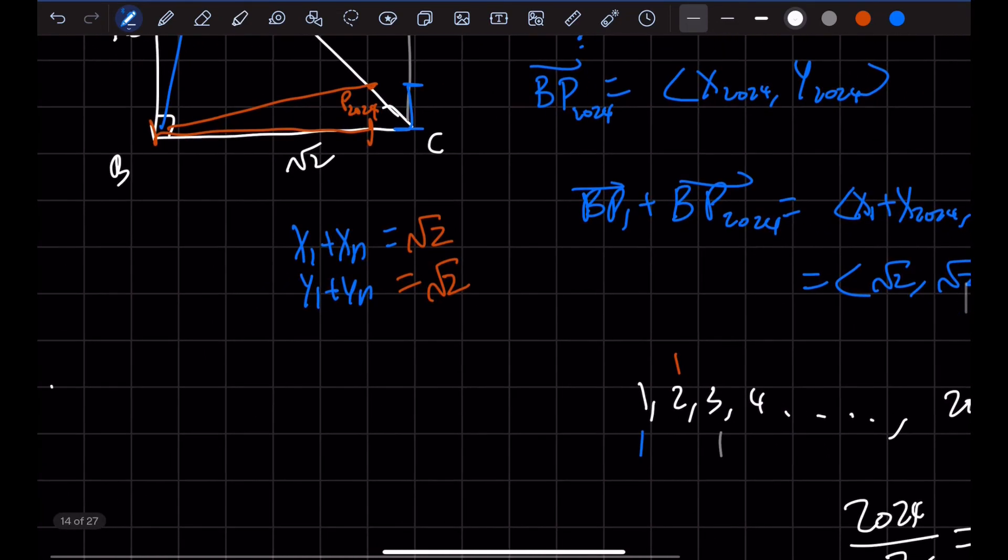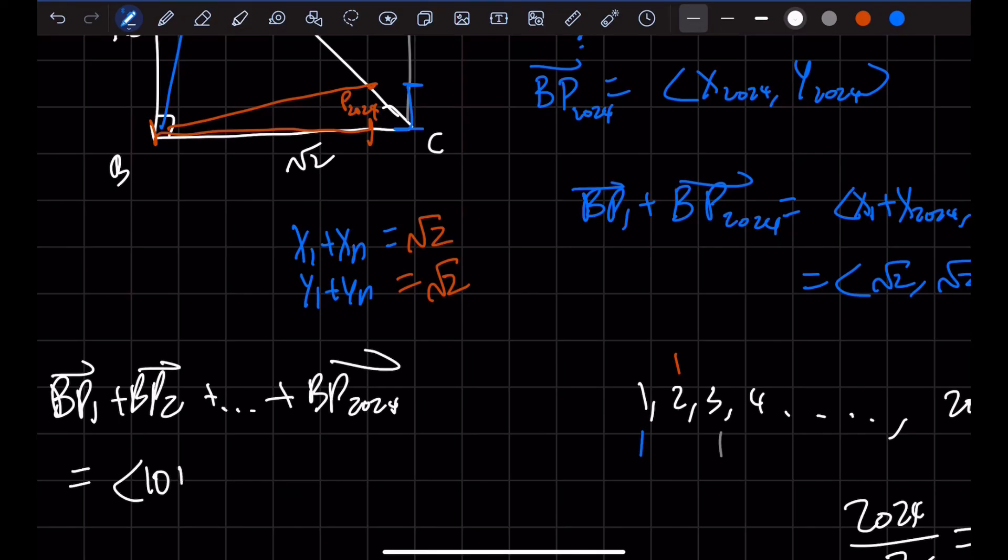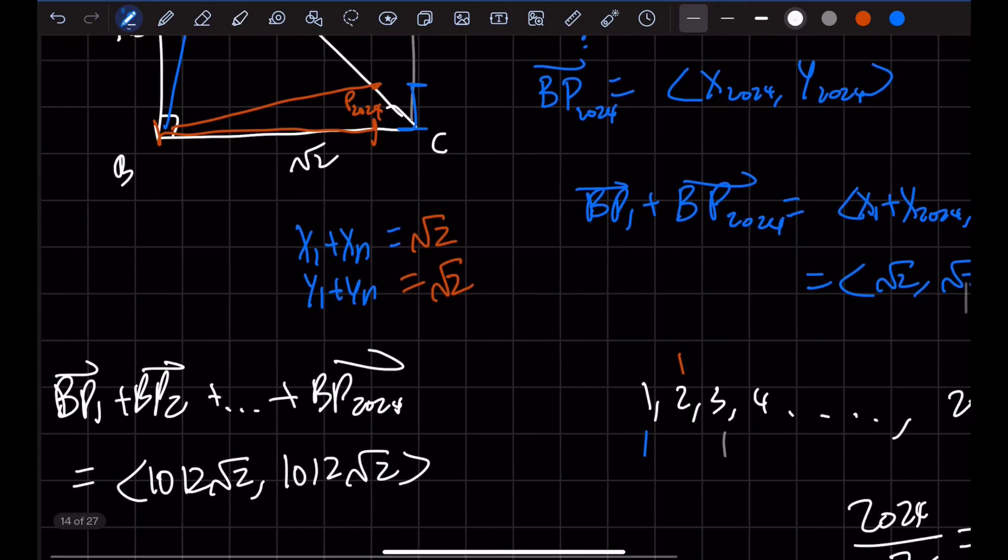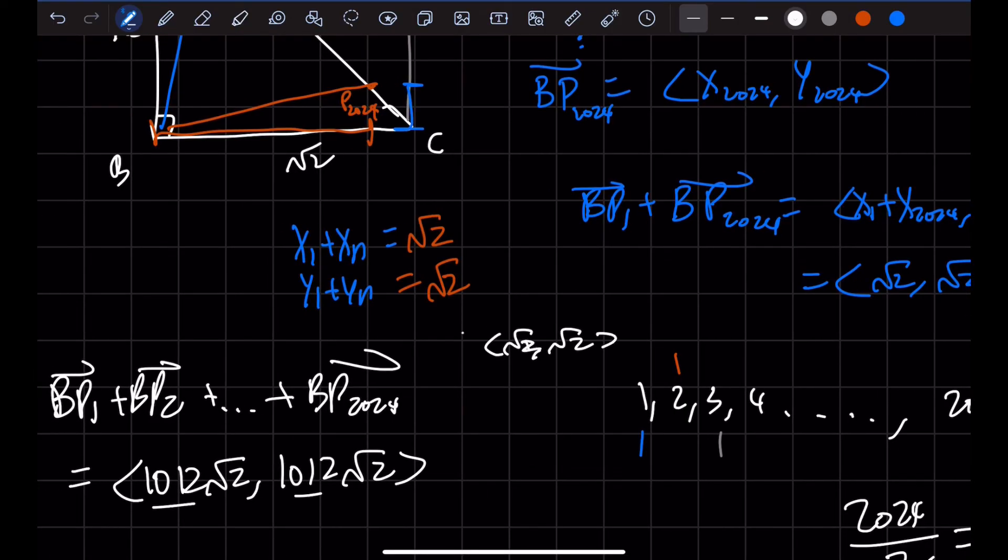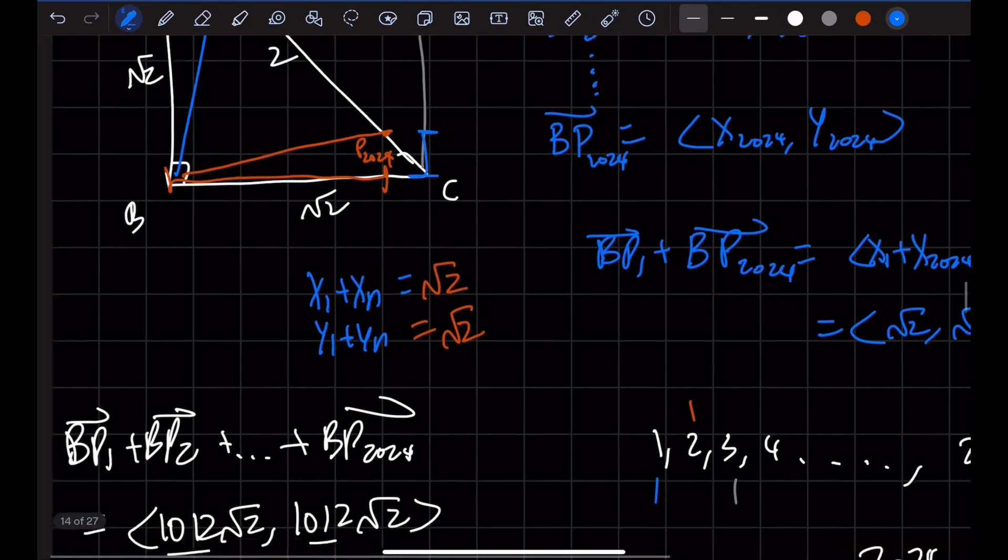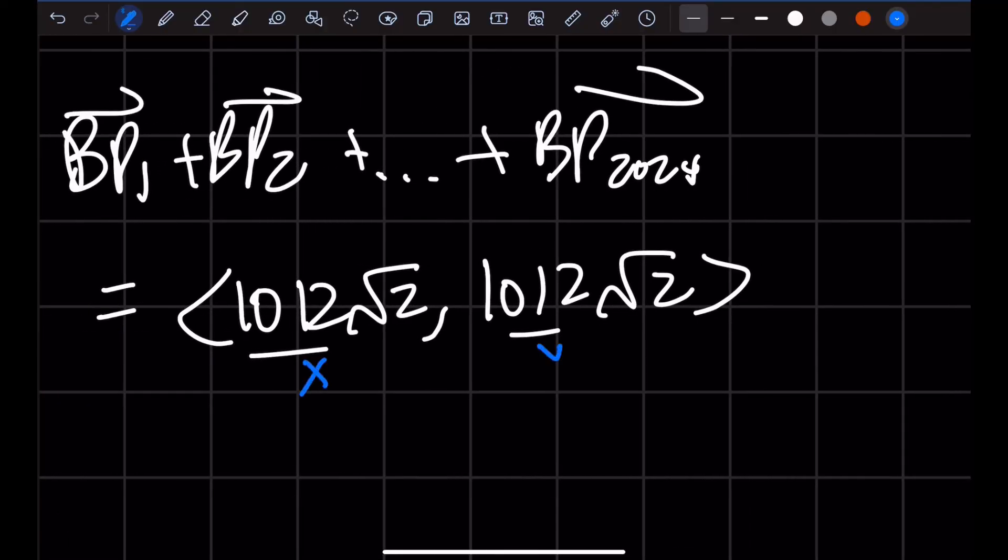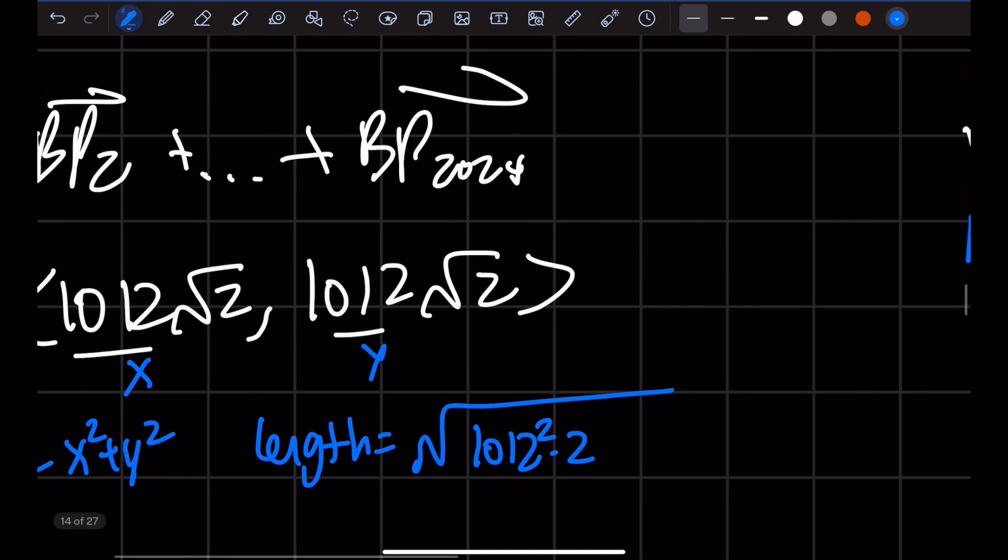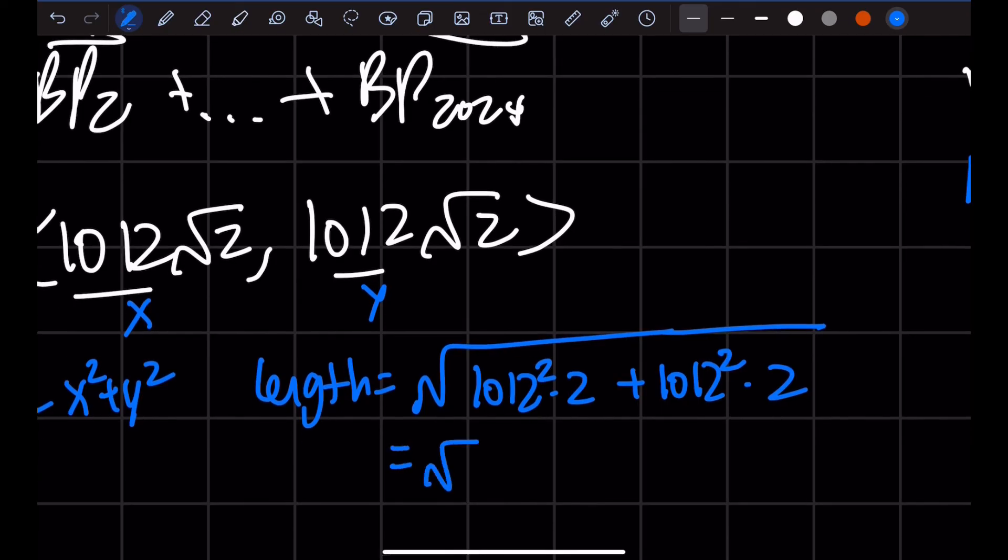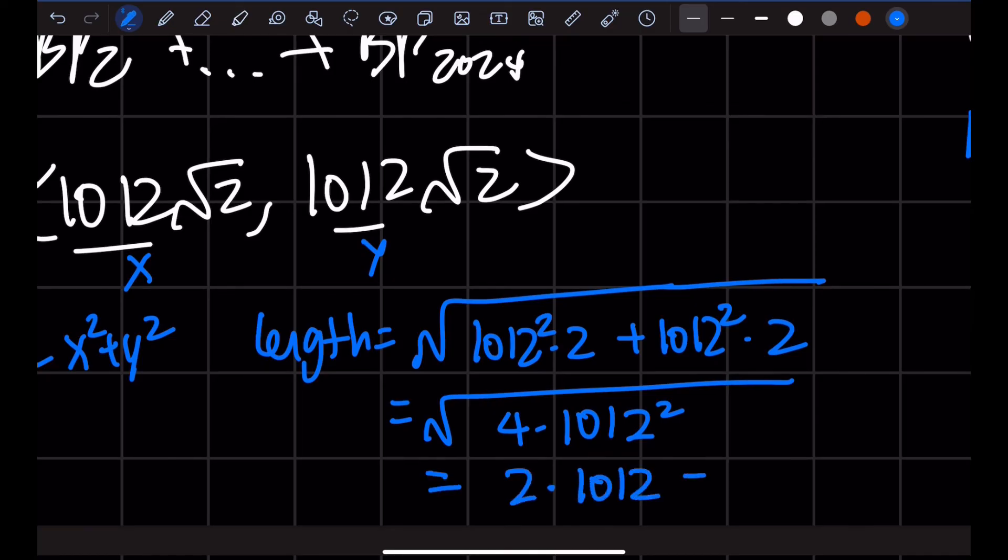So this would mean that when we add up BP₁ + BP₂ + ... + BP₂₀₂₄, this will be equal to ⟨1012√2, 1012√2⟩ because there's 1,012 of these ⟨√2, √2⟩ pairs. So we want to find out the length of the vector sum. This is the length of the X and this is the length of the Y. So by Pythagoras, we know that length² equals X² plus Y². So the length here would be equal to √(1012² × 2 + 1012² × 2). This would be equal to √(4 × 1012²). So this would be equal to 2 × 1012, which is 2024.